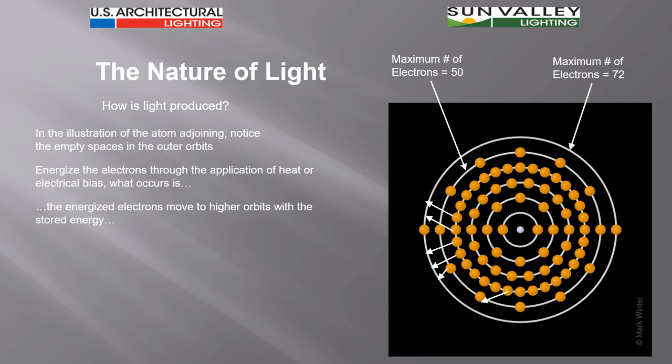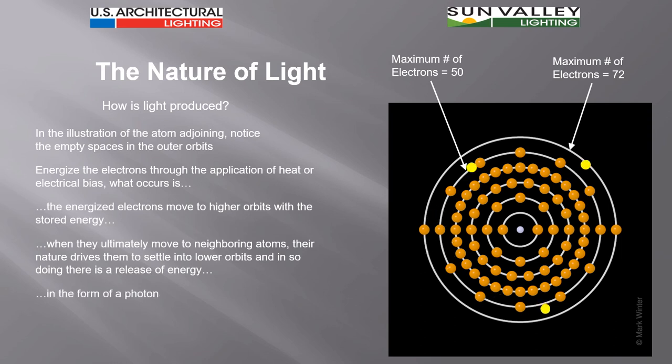When we get it up high enough, that's when the electrons begin to flow to neighboring atoms and we have conductivity take place. That's electrical flow that takes place. In this particular instance, when they ultimately move to neighboring atoms, their nature drives them to settle into lower orbits, and in doing so they release that stored up energy in the form of a photon.